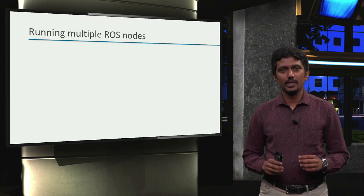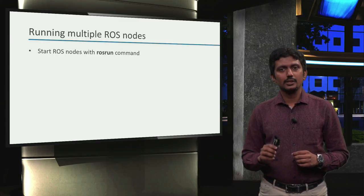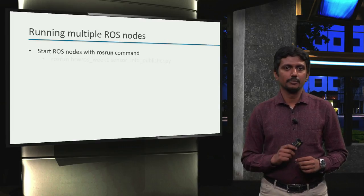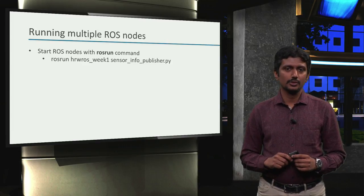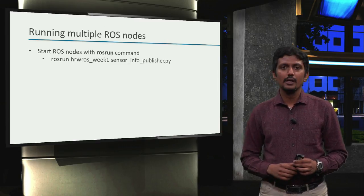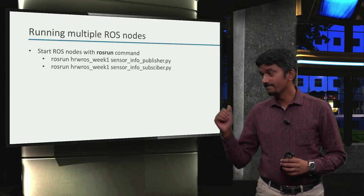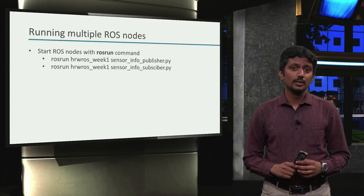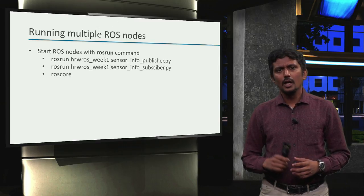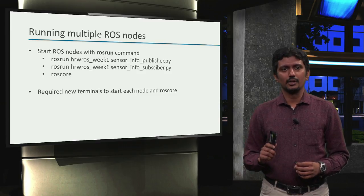So far, we have programmed 6 ROS nodes and started each ROS node with the ros run command. For example, the sensor-info-publisher was started like this, and the sensor-info-subscriber like this, and of course, not to forget the ros-core command. And moreover, we needed a new terminal each time to run these commands.